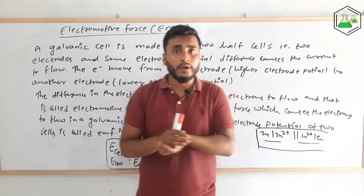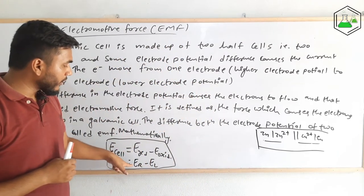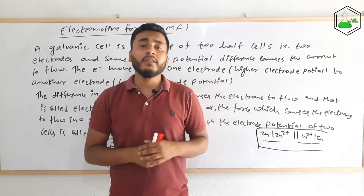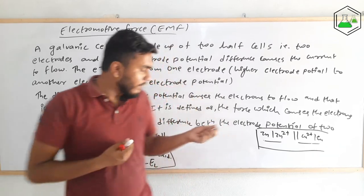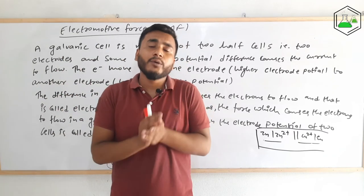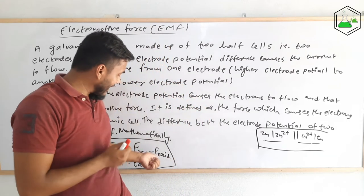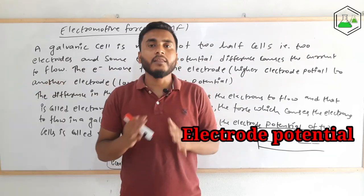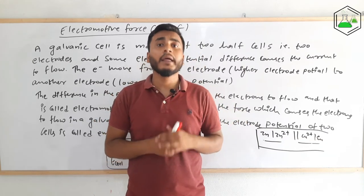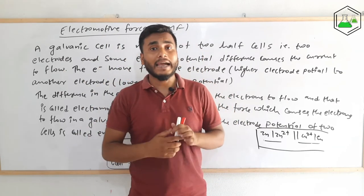The overall cell potential depends on the electrode potentials of the reduction half and oxidation half individually — that is, when the cell is not working. We find the values of E_reduction and E_oxidation separately and take their difference to get the overall cell potential. This mathematical value is measured using a potentiometer. That is what electromotive force actually is.